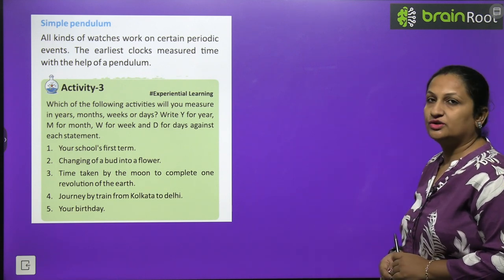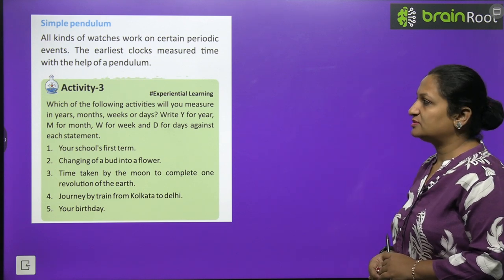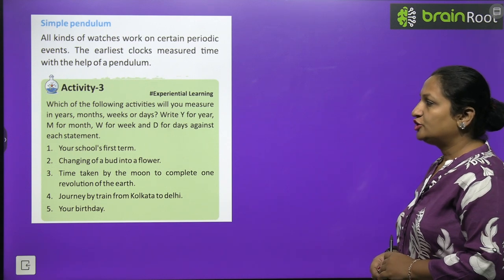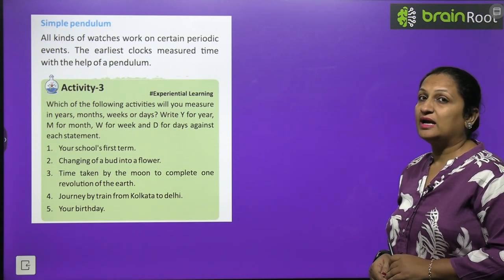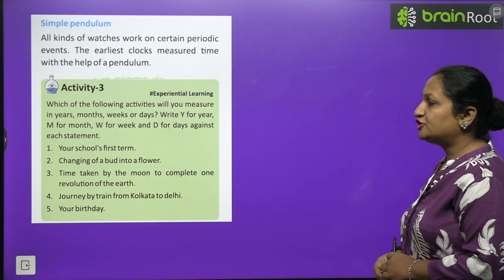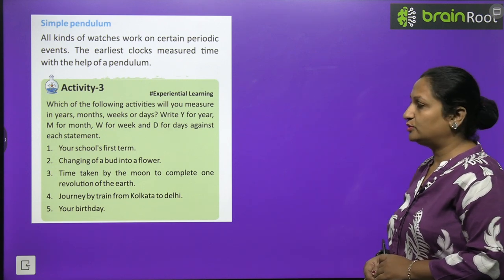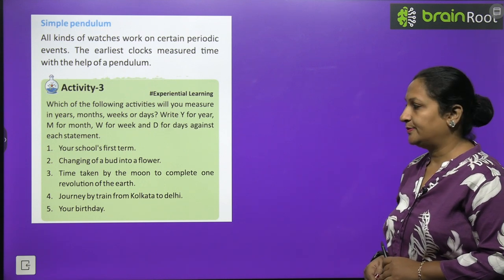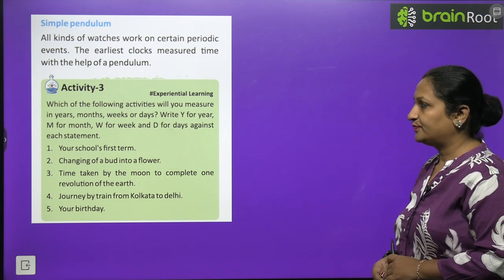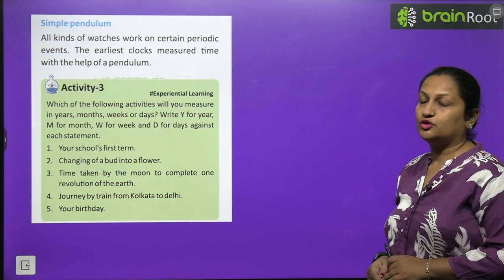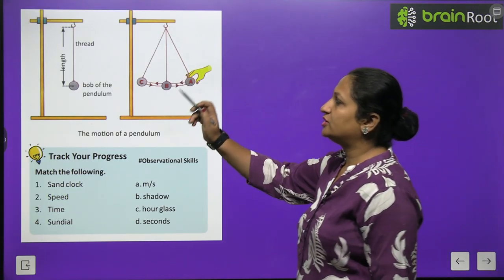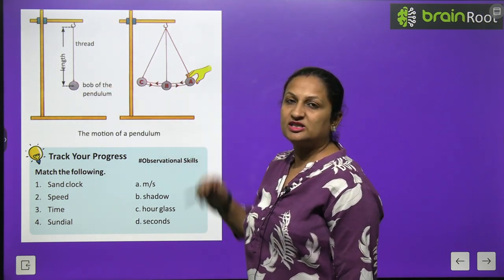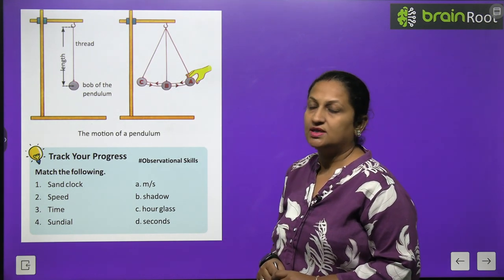Activity: which of the following activities will you measure in years, months, weeks, or days? Write Y for year, M for month, W for week, D for days against each statement. Your school's first term finishes within 2 or 3 months — write M. Changing of a bud into a flower takes weeks — write W. Time taken by the Moon to complete one revolution around the Earth — write M for month. Journey of a train from Kolkata to Delhi will take days. Your birthday comes every year — write Y.